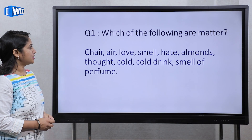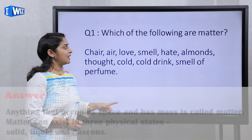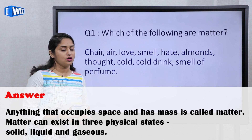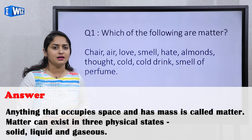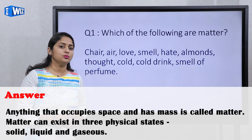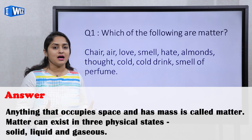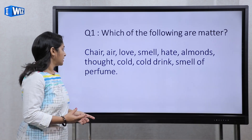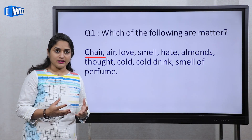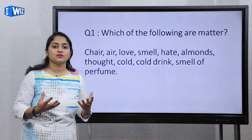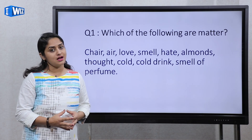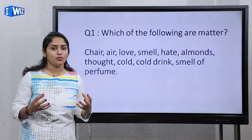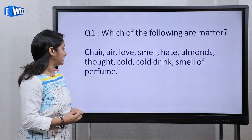The first question is: which of the following are matter? Matter is something that has mass and occupies space. First is chair — chair is matter because it has mass and occupies space. It is in solid state and its particles are closely packed.